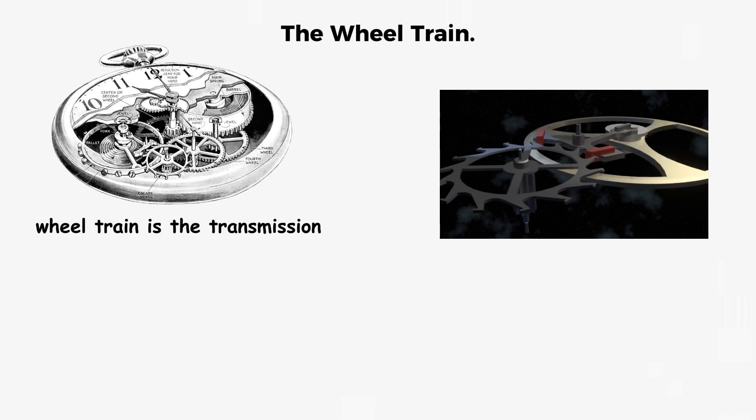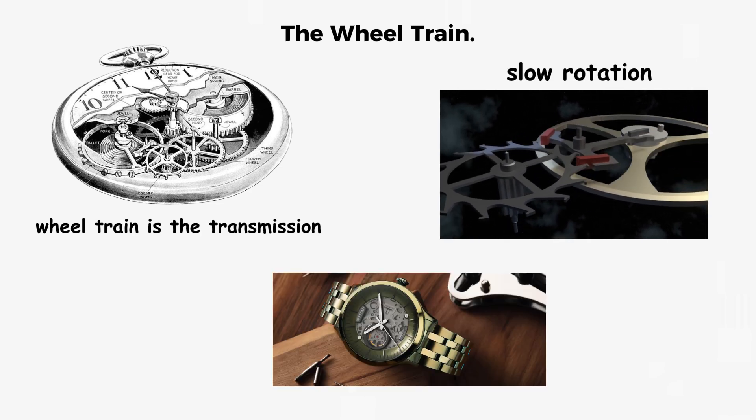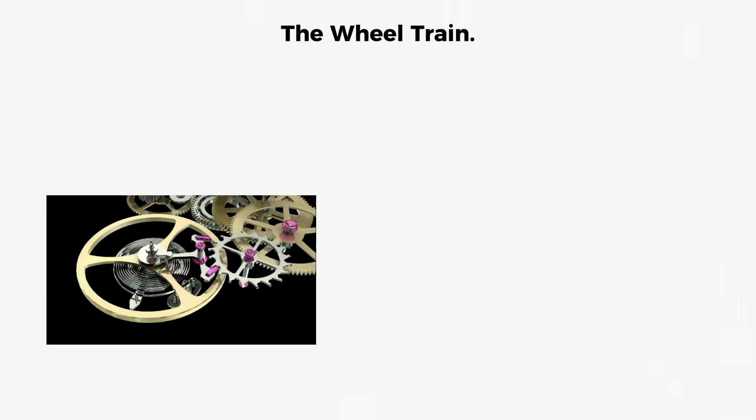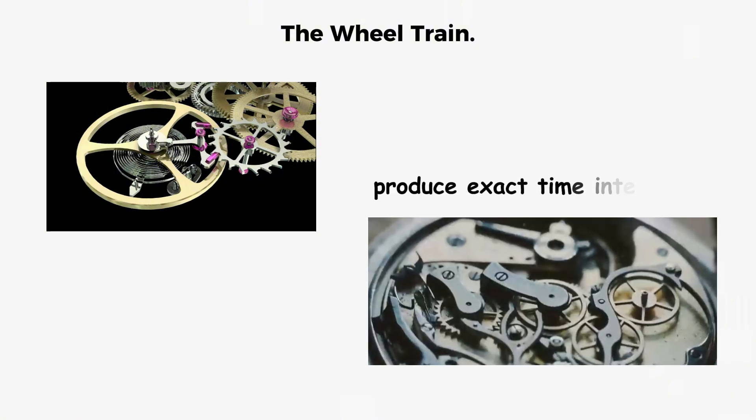The wheel train. The wheel train is the transmission system that converts the mainspring's slow rotation into the precise speeds needed to move the watch hands. It consists of a series of gears, each one turning faster than the last, with each gear carefully sized to produce exact time intervals.